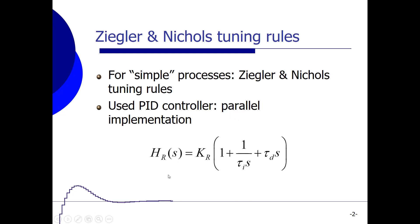So then the controller looks like this. H_R, which is the transfer function of our PID controller, is K_R, which is the proportional gain, times 1 plus 1 over tau_i times s, which is the integral part of the controller, plus tau_d times s, which is the differential part of our controller. So this is the transfer function for our controller.